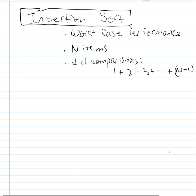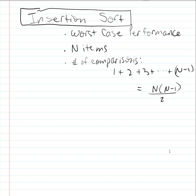That sequence — the number of comparisons proportional to the number of items — can be represented as n times n minus one over two. These are equivalent, and if you try out some values you'll see that you get the same numbers. The number of comparisons is ultimately dominated by the n-squared term; as n gets large, n-squared always dominates over the smaller term.